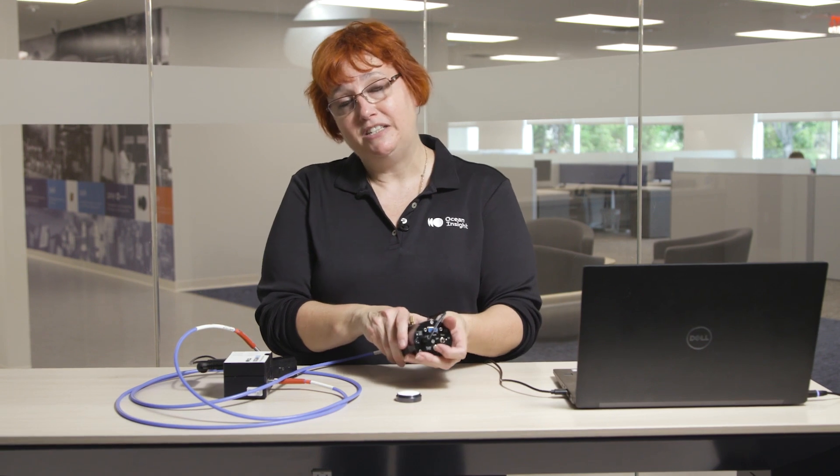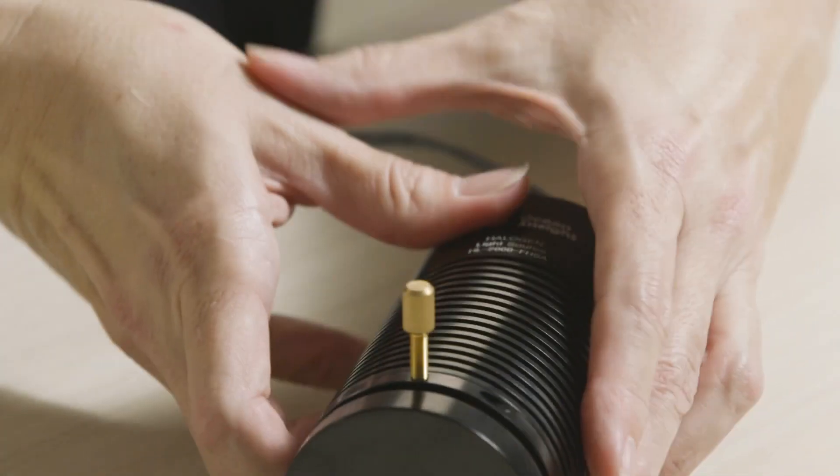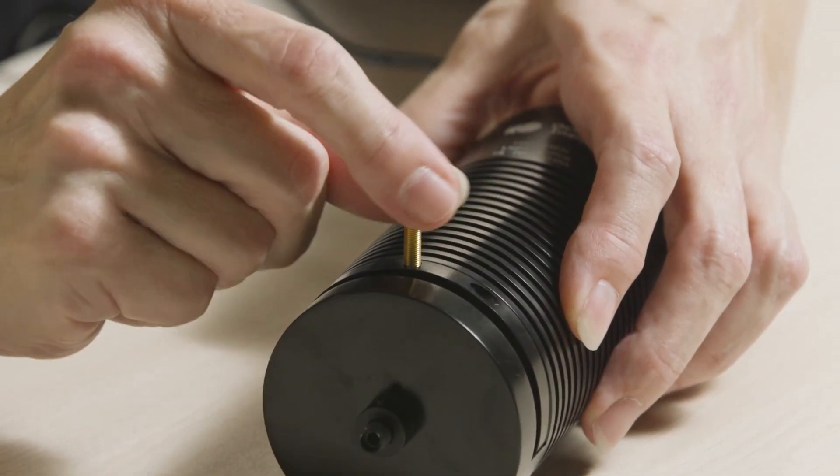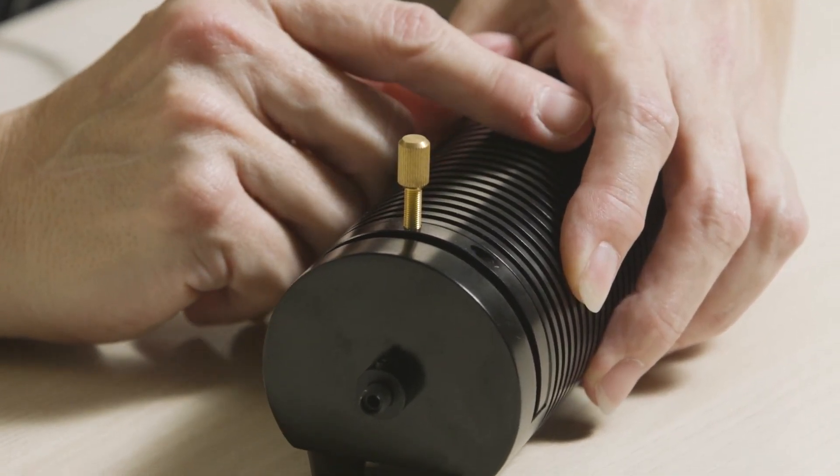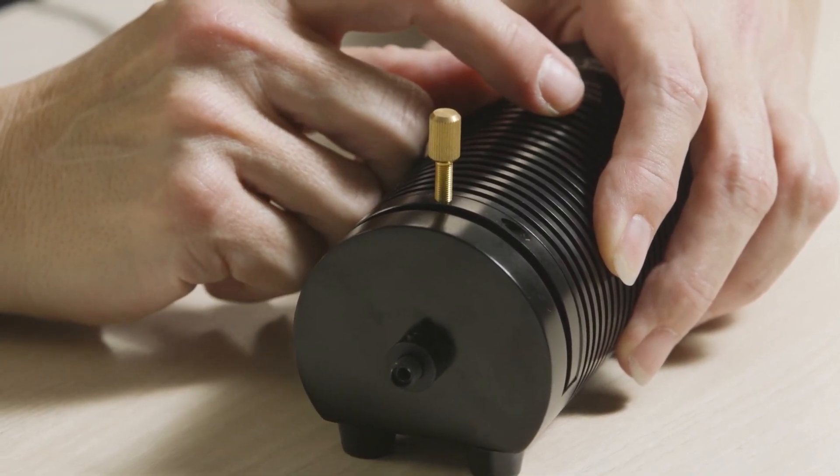We have a nice warmed up light source, and if we turn it off, then we're going to need to let it warm up for another 20 minutes before we use it. On the front of the light source, we have this screw, which will enable you to adjust the light levels. So if you have saturation in your spectrometer, you'll be able to decrease those light levels to avoid saturation.